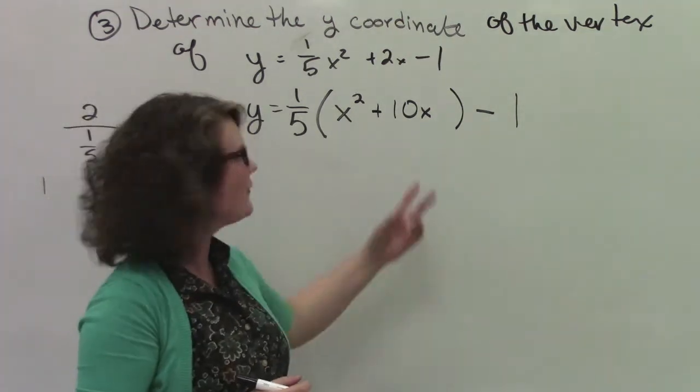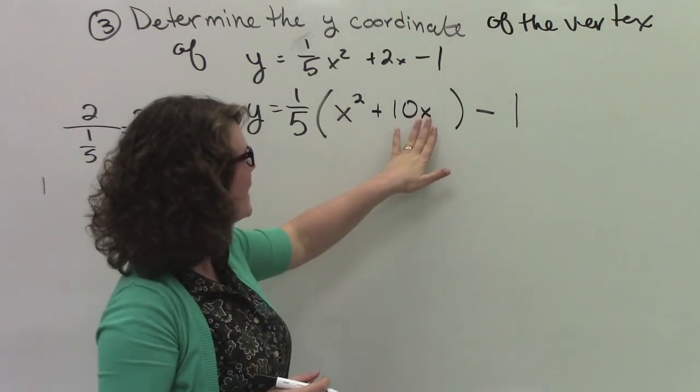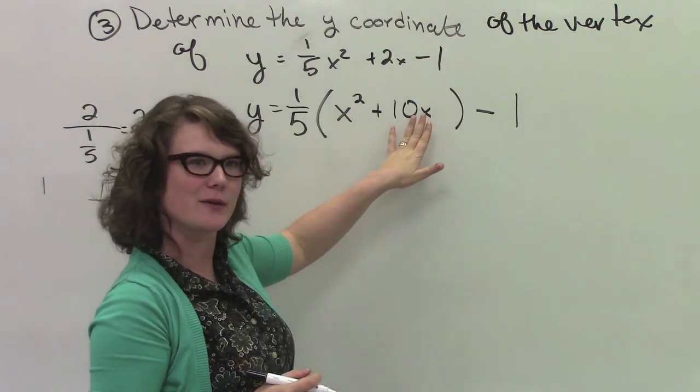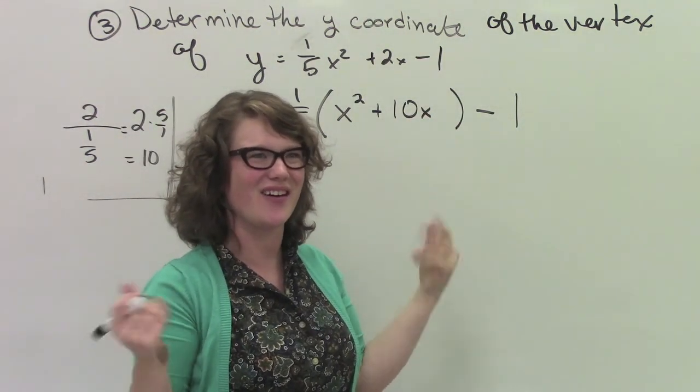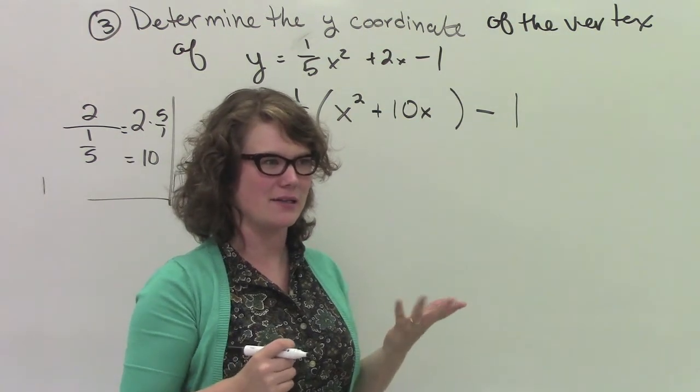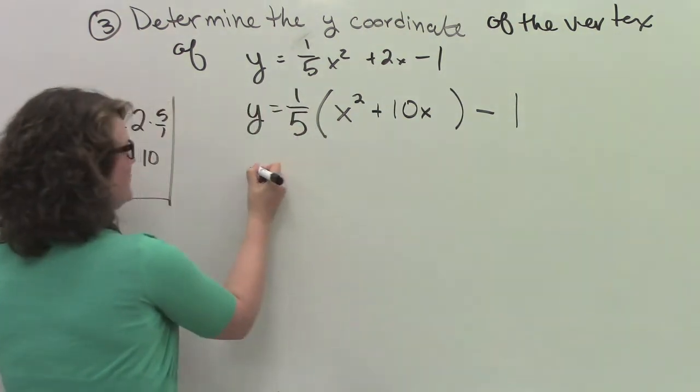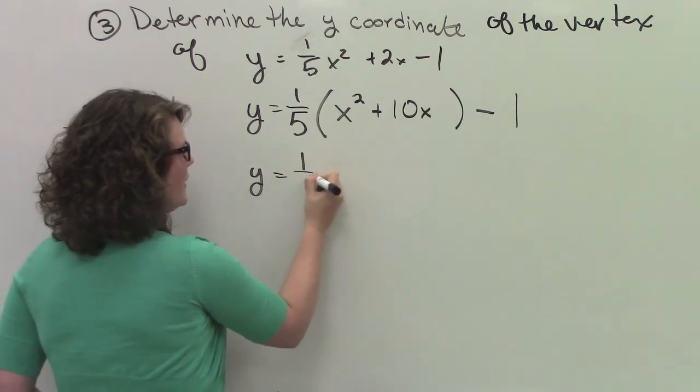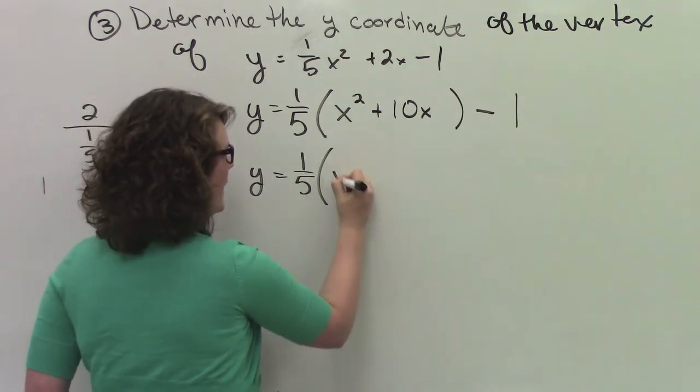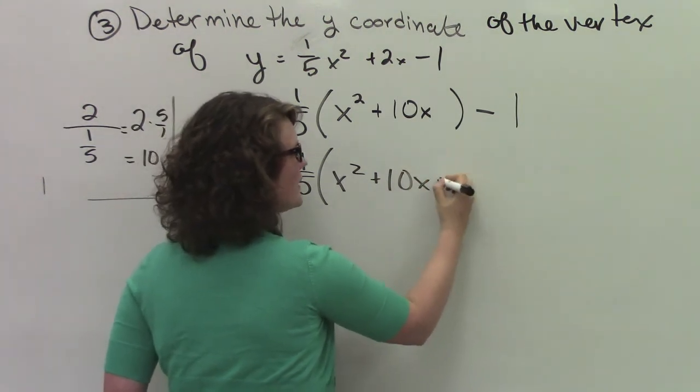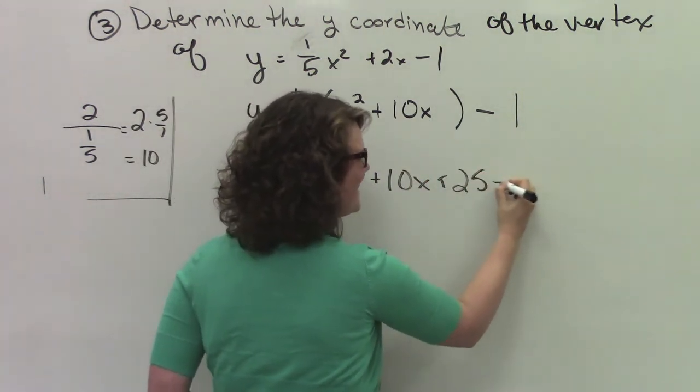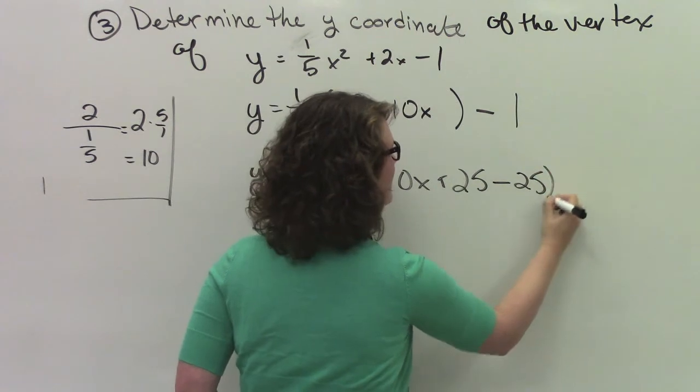We're going to think, okay, what do we have to add and subtract, or what do we need to add to this to make it a perfect square trinomial? And then we have to subtract it, because then it's like we didn't do it at all. 1 plus 1 minus 1, it's 0.